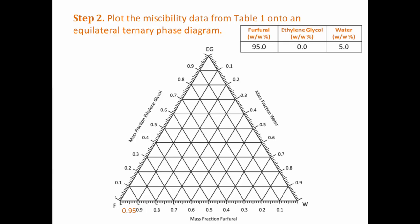Read along the diagonal lines opposite to the apex labelled F. Note that there are two different types of diagonal lines crossing this axis. Do the same for ethylene glycol and water.